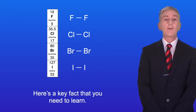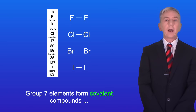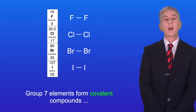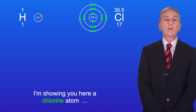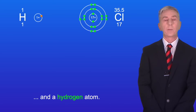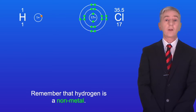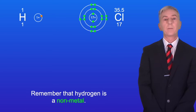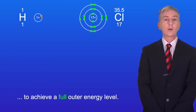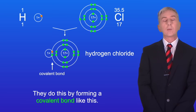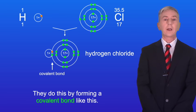Here's a key fact that you need to learn: Group 7 elements form covalent compounds when they react with other non-metal elements. I'm showing you here a chlorine atom and a hydrogen atom — remember that hydrogen is a non-metal. Both of these elements require one extra electron to achieve a full outer energy level, and they do this by forming a covalent bond like this.